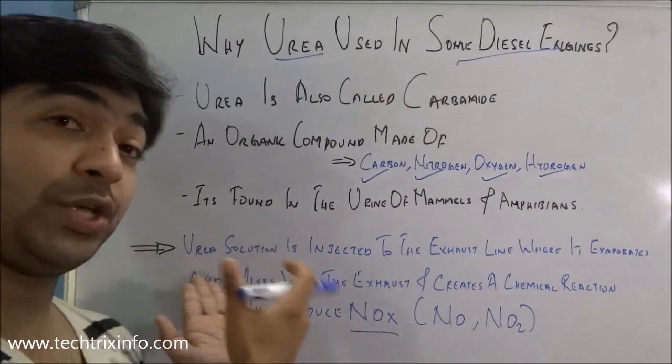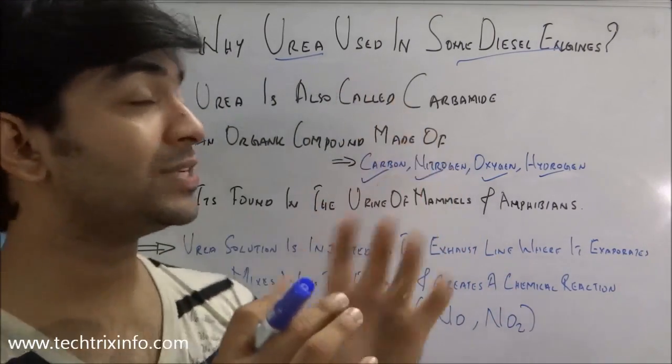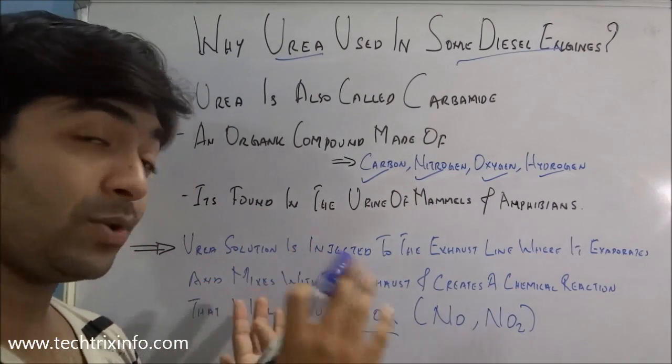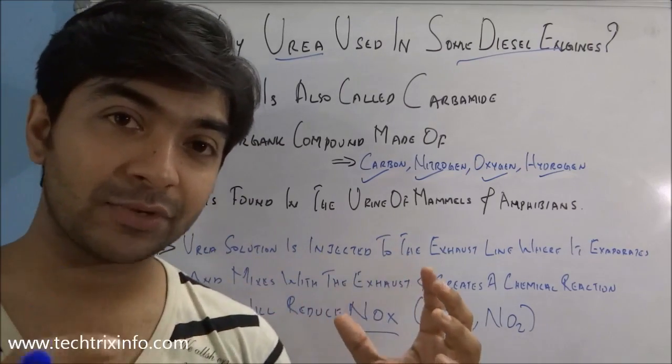With the help of the urea in the exhaust stream, that's how urea is used in diesel engines to reduce the amount of pollution, reduce the amount of the harmful NOx in the exhaust line. I believe you understand why it's being used.